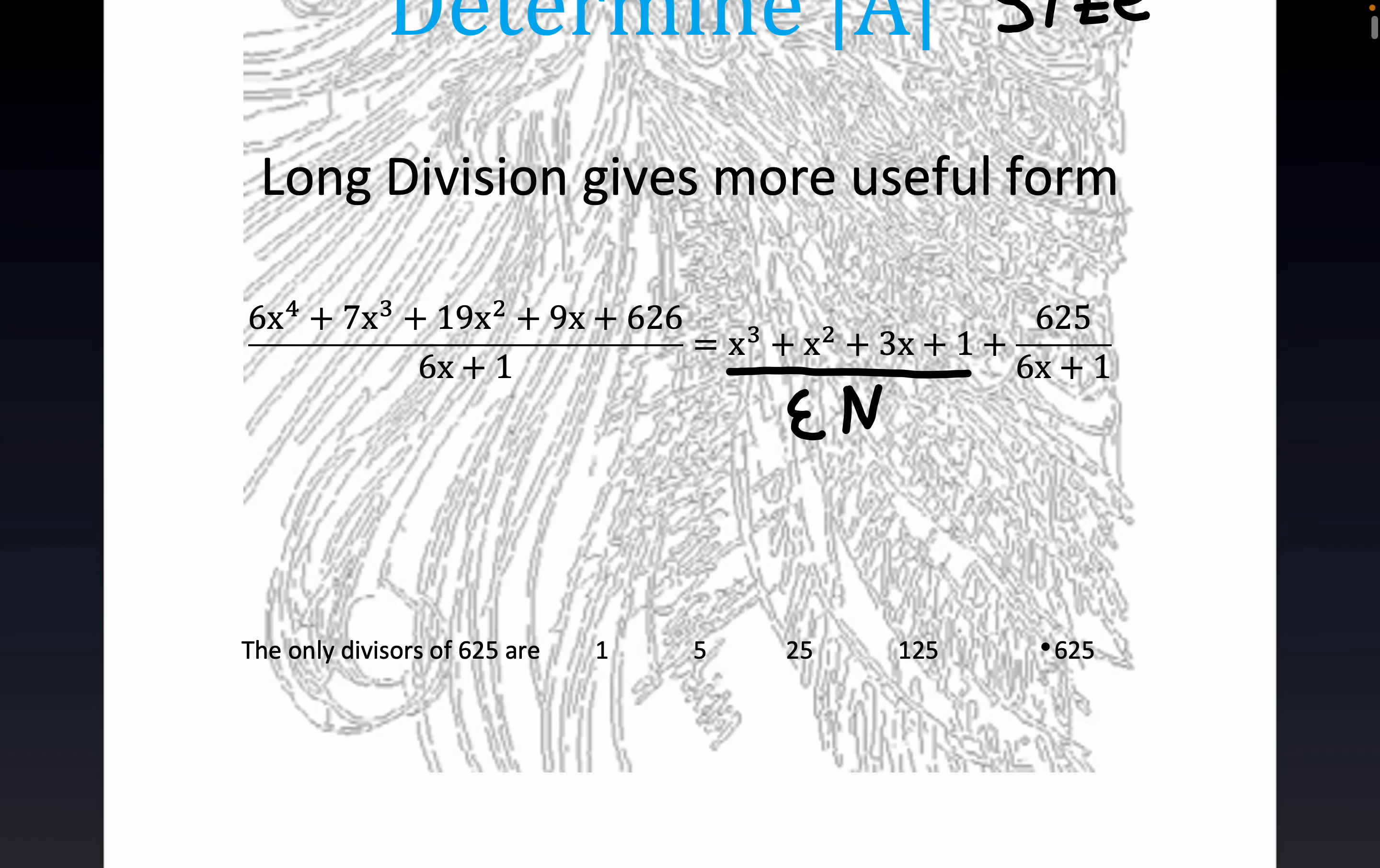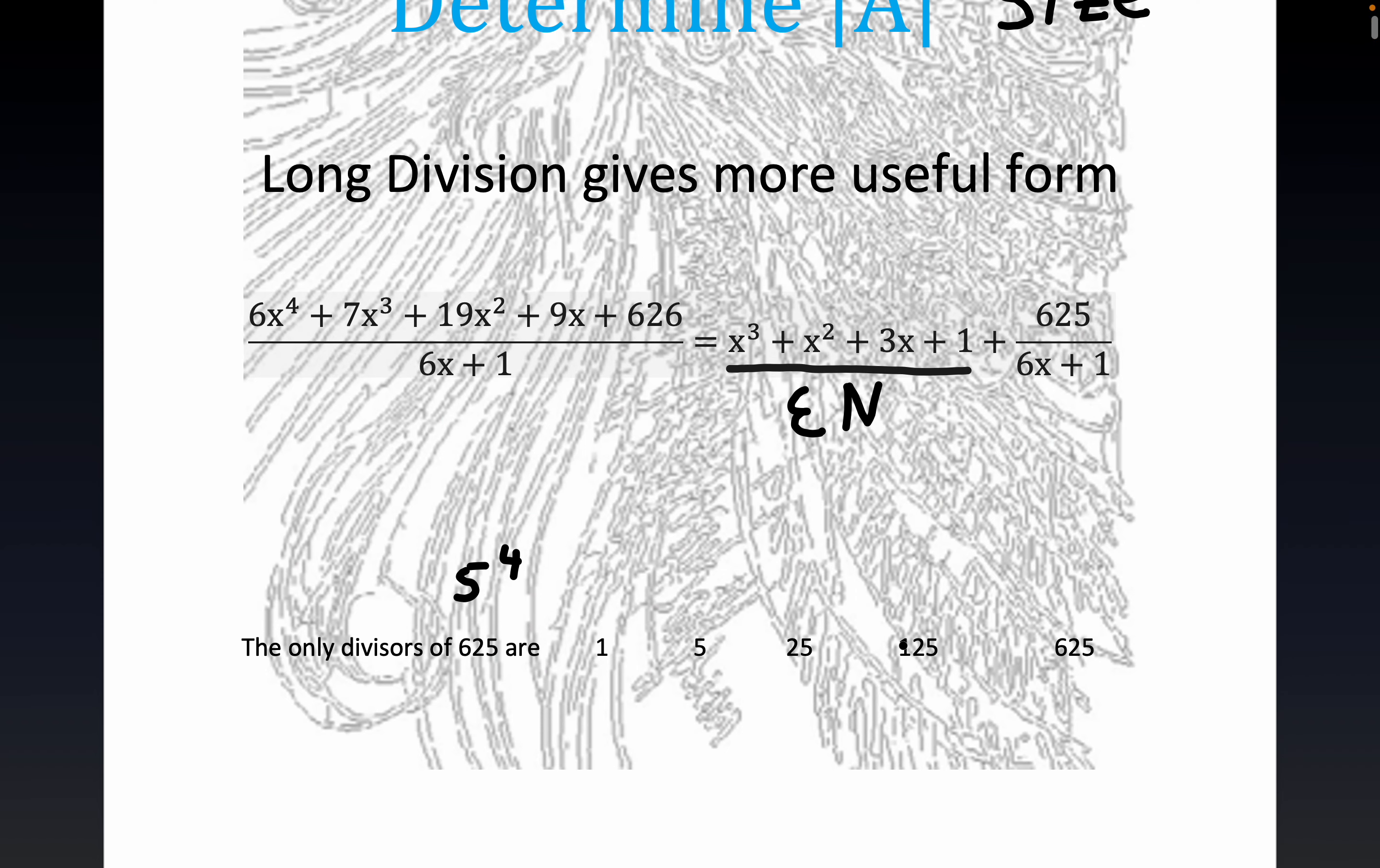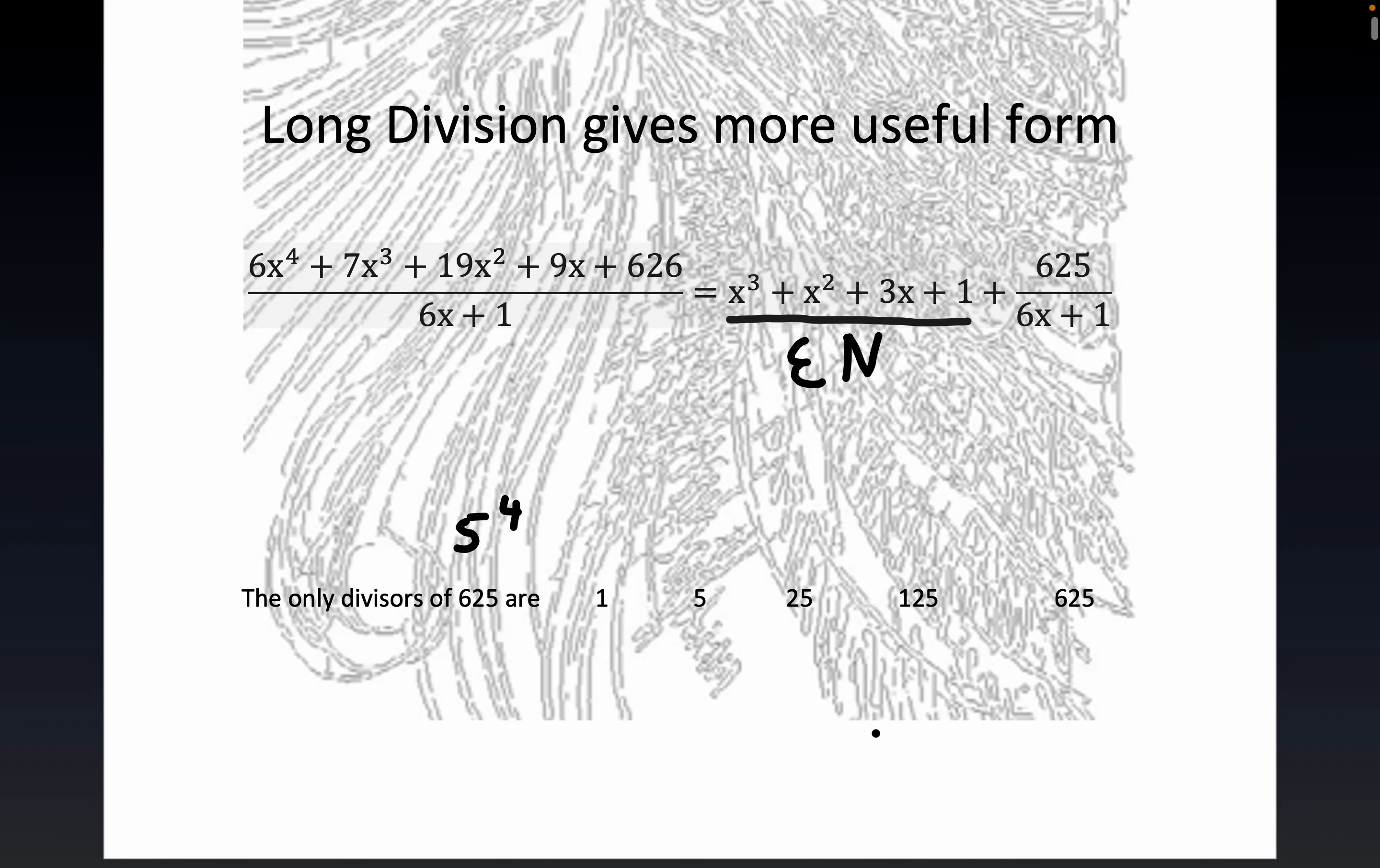So now the divisors are pretty easy here. You may recall this is 5 to the fourth power. And so it's quite easy to list all the divisors of a prime number raised to the fourth power. You'll note that this is 5 to the first, 5 squared, 5 cubed, and 5 to the fourth right here, of course. So those are the only divisors by just the fundamental theorem of algebra about the unique prime factorization.